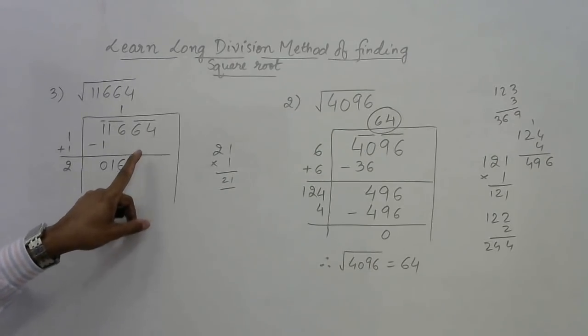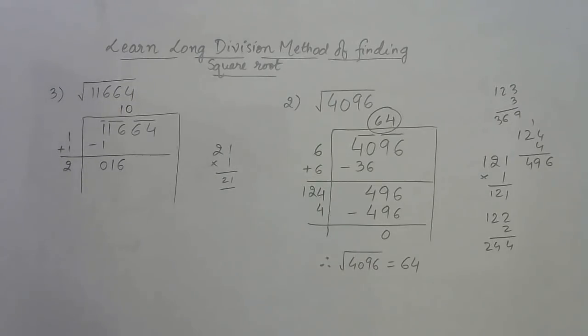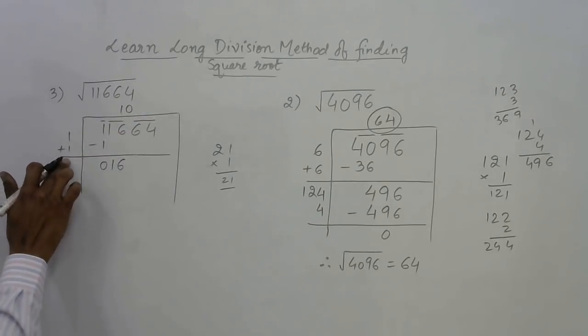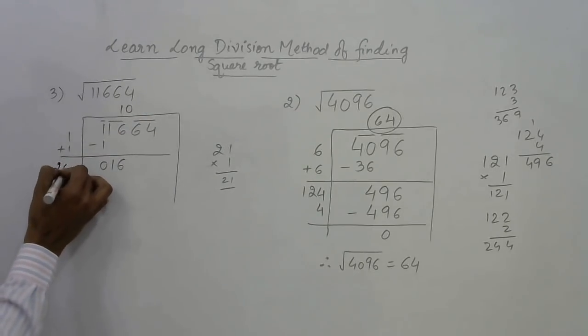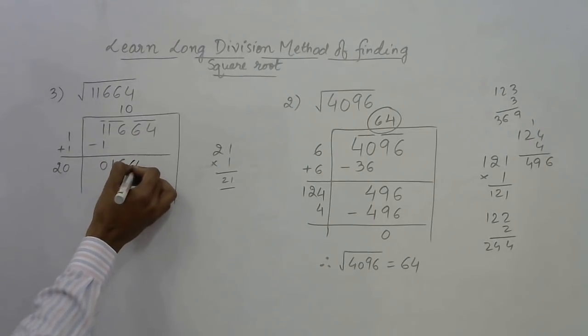To bring one more pair, we have to put a 0 here just like we do in division. So put a 0—that 0 will come here also, and this will enable us to bring 64 down like this.